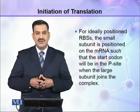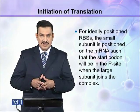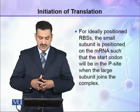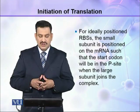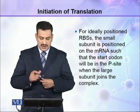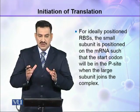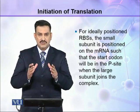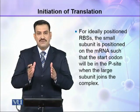For ideally positioned RBS ribosomal binding sites, the small subunit is positioned on the mRNA such that the start codon will be in the P site when the large subunit joins the complex. The start codon will only be on the P site — not the A site or E site.